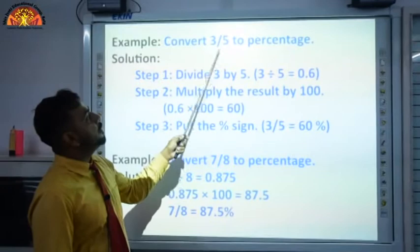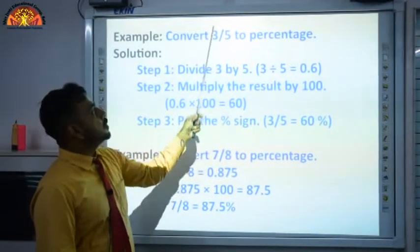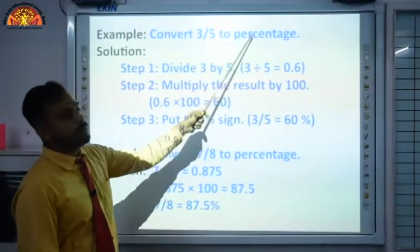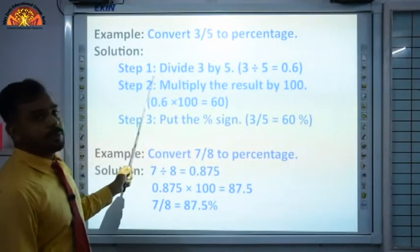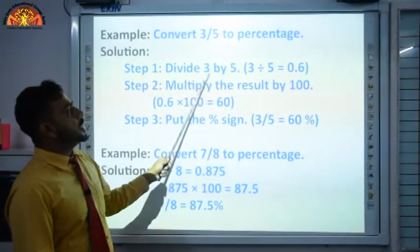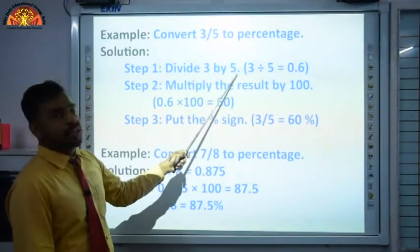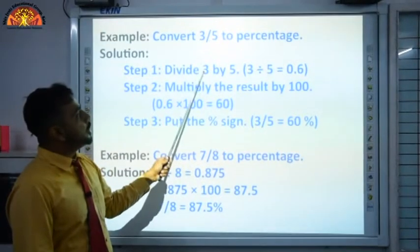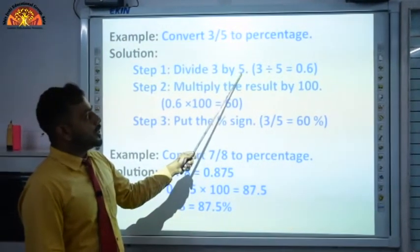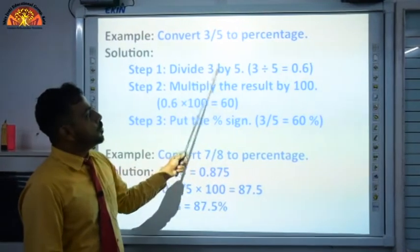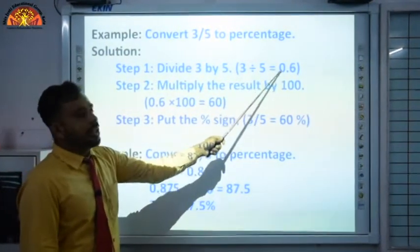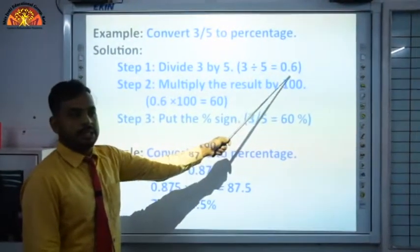Example: convert 3/5 to percentage. Step 1 — divide 3 by 5. Here the numerator is 3 and the denominator is 5. 3 ko hum 5 se divide karenge, so result milega 0.6. Step 2 — multiply the result by 100. 0.6 × 100 = 60. Then put the percentage sign — result is 60%.